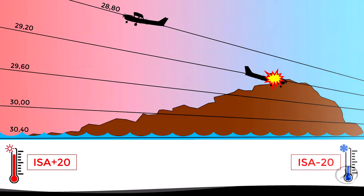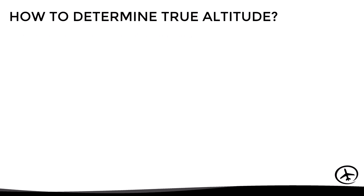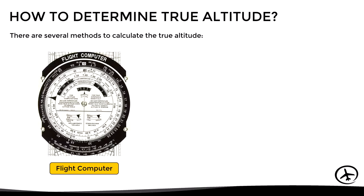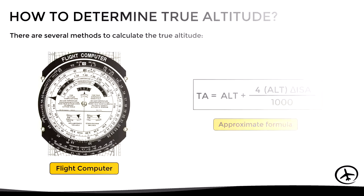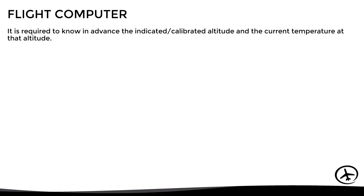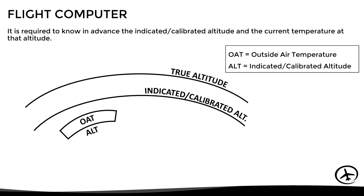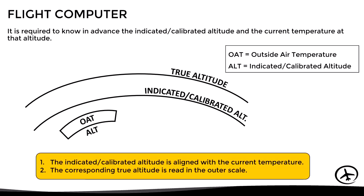Now that we have understood the effect of temperature and the concept of true altitude, let's see how it is determined. There are several methods to calculate the true altitude: we can use a flight computer — either manual or electronic — or we can use an approximate formula. To use the flight computer, it is required to know in advance the indicated or calibrated altitude and the current temperature at that altitude. The first step is to align the altitude with the corresponding temperature, and then read the corresponding true altitude on the outer scale.